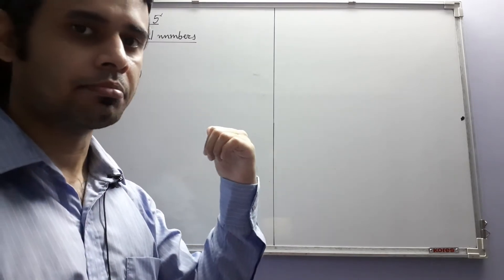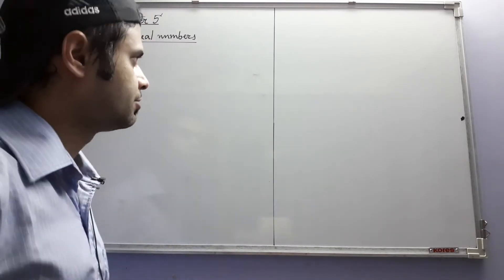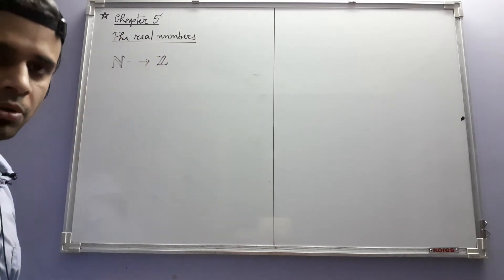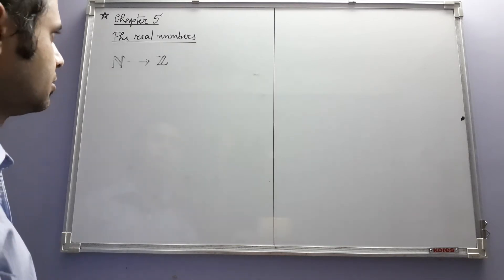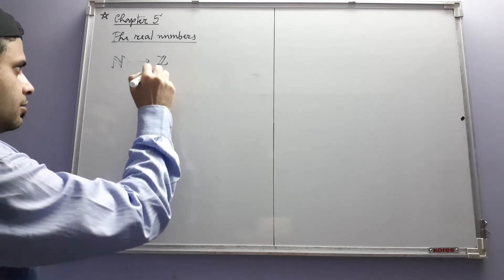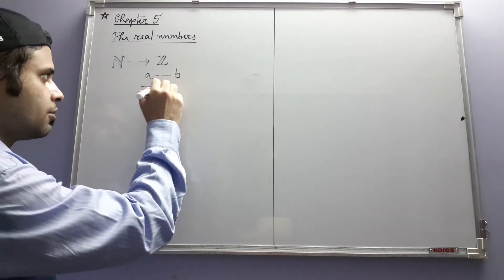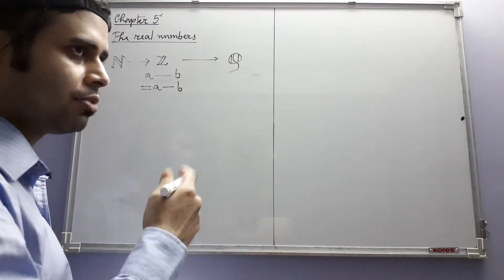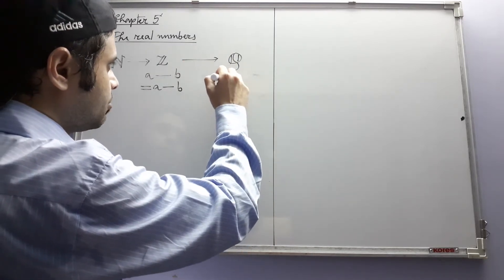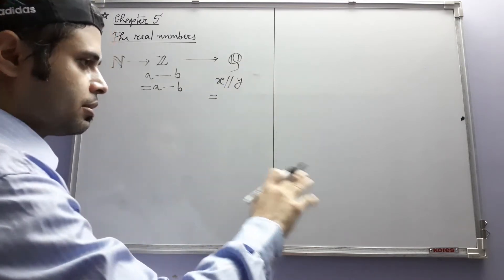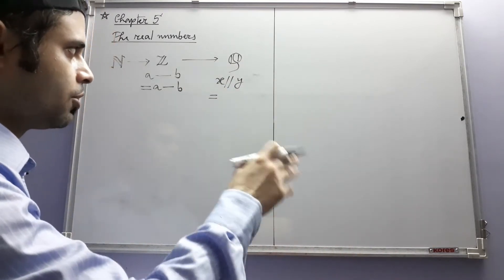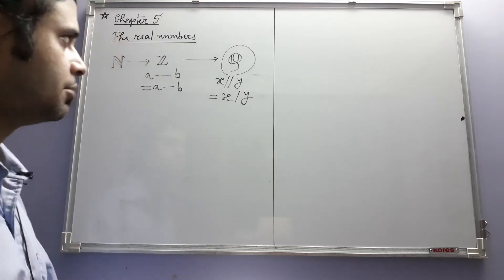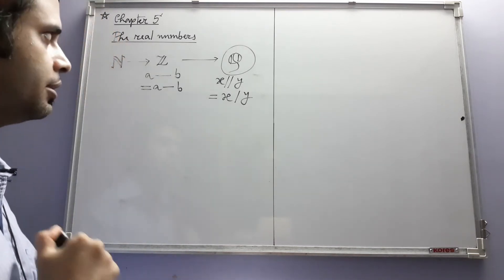We have finally come to the stage where we are going to construct the system of real numbers. This is Chapter 5. Before we start the first section, there is some discussion about what we have achieved so far and why we need the system of real numbers — why we need to move from the system of rationals to the system of real numbers.